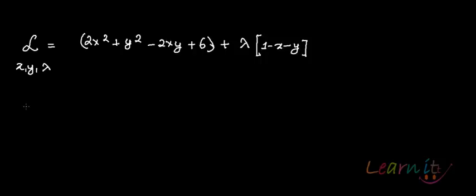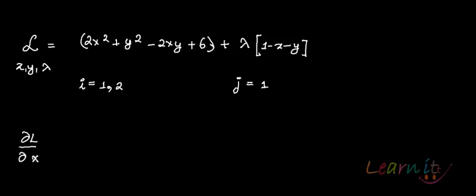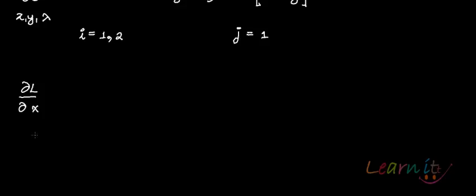There are two variables, x and y, so i = 1, 2, and there is one constraint, j = 1. So how many partial derivatives will you find? You'll find three partial derivatives — one for each variable and one for the constraint. So you'll find del L / del x and del L / del y.